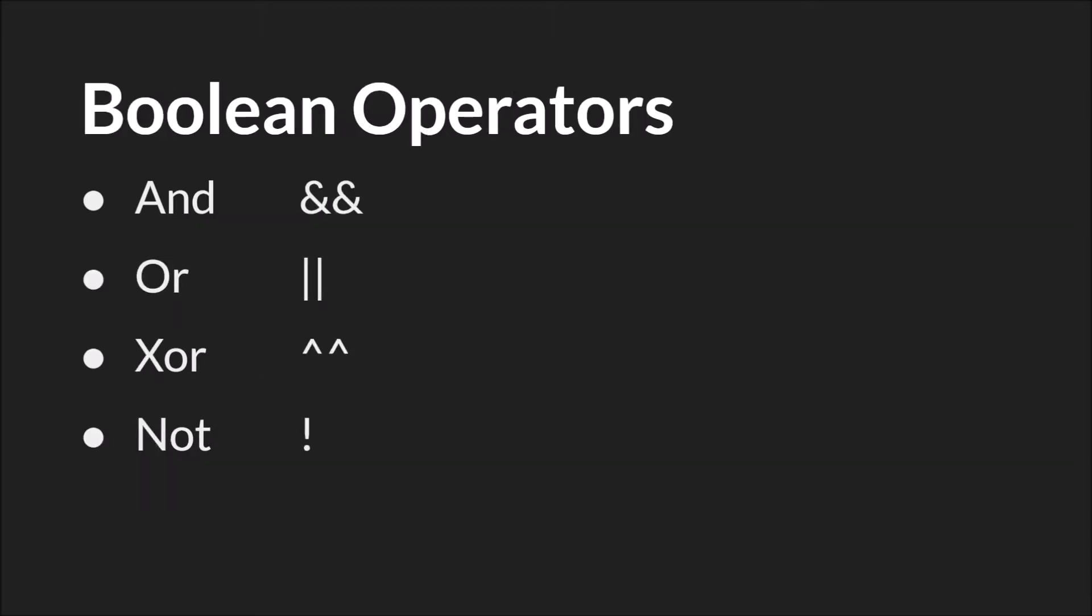In programming, we have four basic Boolean operators. We have AND, OR, XOR, and NOT. And we have symbolic equivalents of each of those.